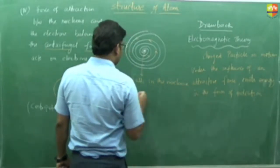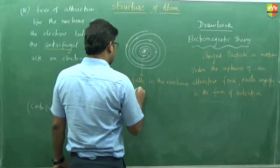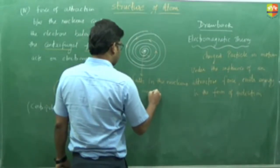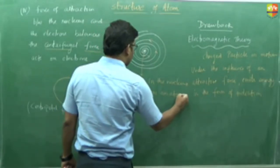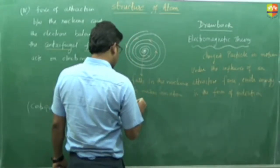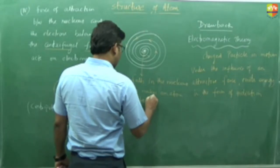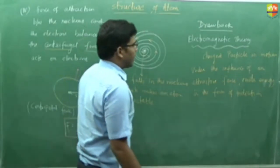Falls in the nucleus which makes an atom unstable. When the electron falls into the nucleus the atom becomes unstable.